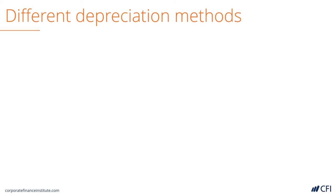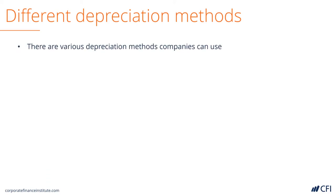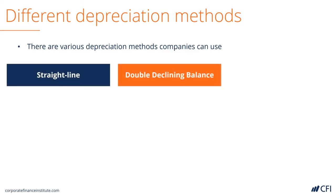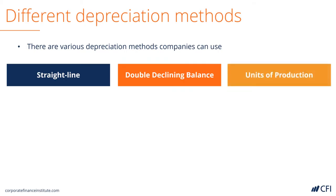It's important to point out that there are various different depreciation methods that a company can use to calculate depreciation expense. Three of the most common are the straight line method, the double declining balance method, and the units of production method. Let's take a look at each of these three in more detail.